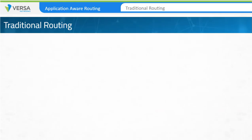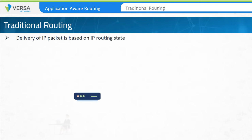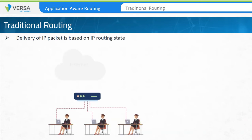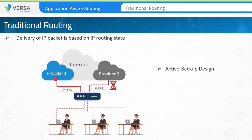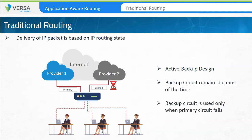In traditional IP networks, the delivery of IP packets over a WAN access circuit is dependent on IP routing state. Administrators take control of the network by deploying multiple circuits. In the example, the circuit through Provider 1 is the primary circuit, and the circuit through Network Provider 2 is a backup circuit. This design is often called an active-backup design. In this configuration, the backup circuit remains idle most of the time and is only used when the primary circuit fails.